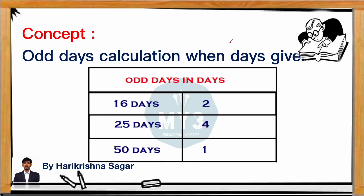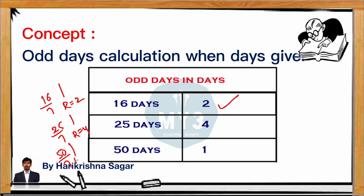For example, if we have 16 days: 16 divided by 7 gives remainder 2, so odd days are 2. If you have 25 days: 25 divided by 7 gives remainder 4. If you have 50 days: 50 divided by 7 gives remainder 1, so odd days are 1. Like that, we can find out the odd days for any given number of days.